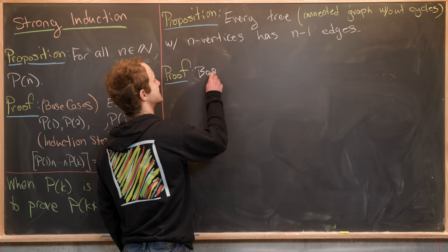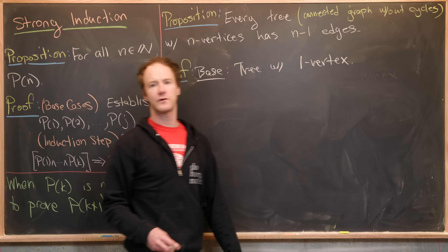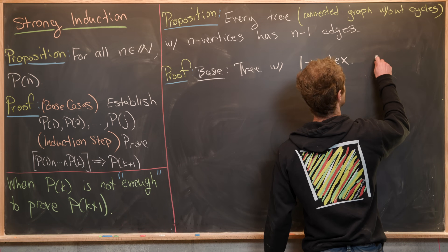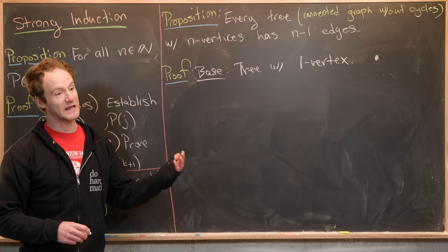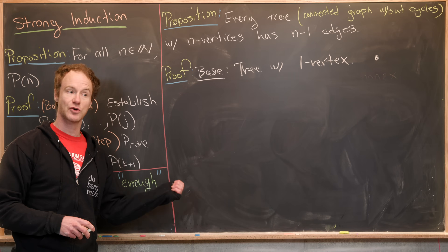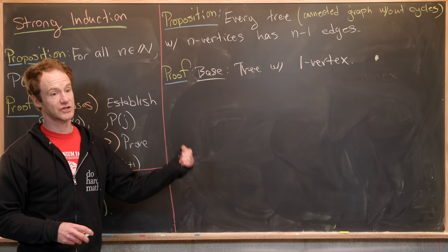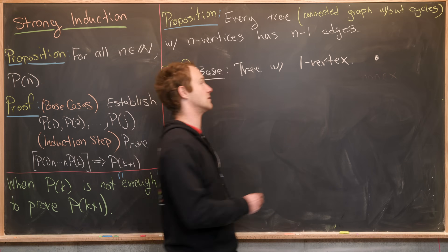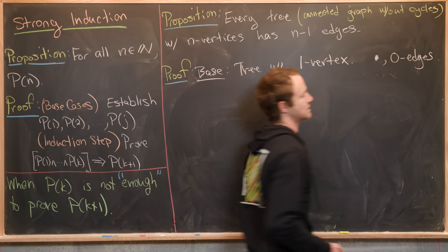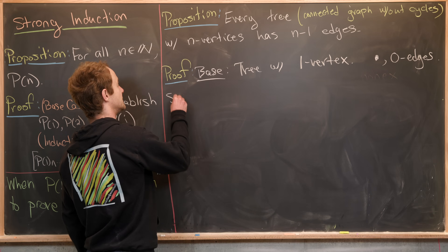The base case is a tree with one vertex. A tree with one vertex is just a single dot with no edges, because any edge added would create a cycle — an edge needs an initial and final vertex, and if both are the same vertex, that's a cycle. So it has zero edges, and 0 = 1 - 1.